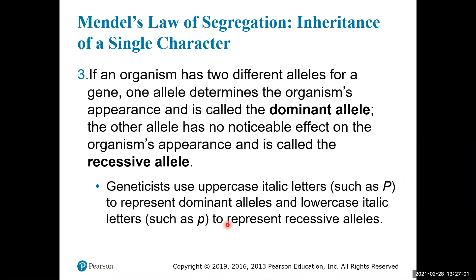The third hypothesis relates to dominance. Between the two alleles, there will be a dominant allele and a recessive allele. The dominant allele will always show up as the trait if it's present. The recessive allele will only show up if the organism has two recessive alleles. Geneticists generally use uppercase letters to represent dominant alleles and lowercase letters to represent recessive alleles.